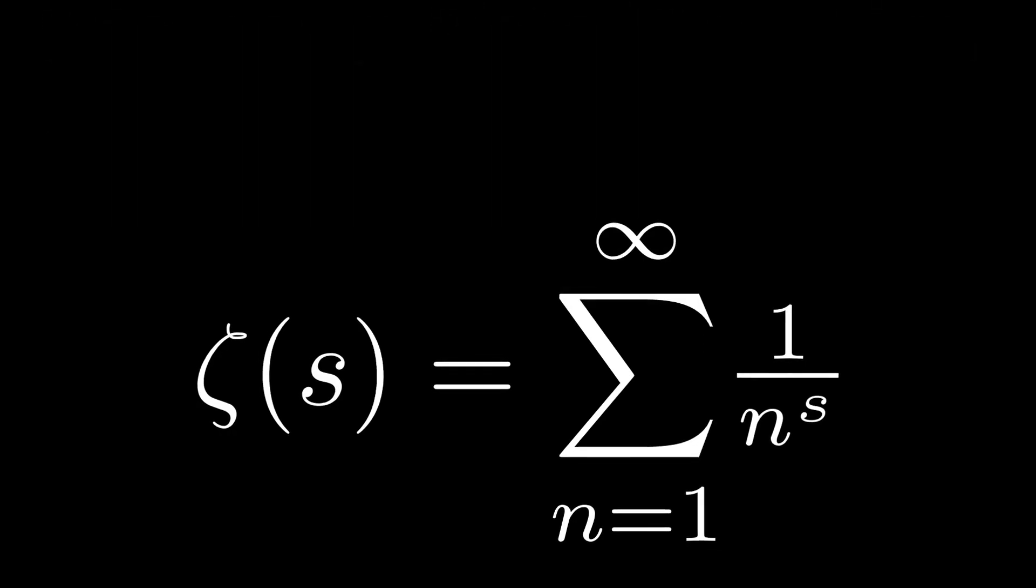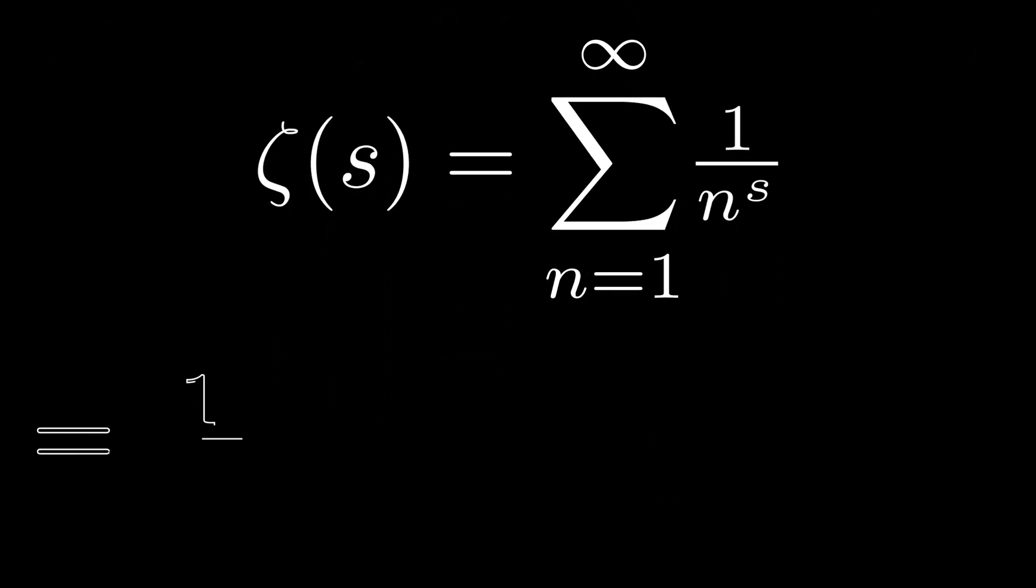So we have 1 over 1 to the s, plus 1 over 2 to the s, plus 1 over 3 to the s, and so on.